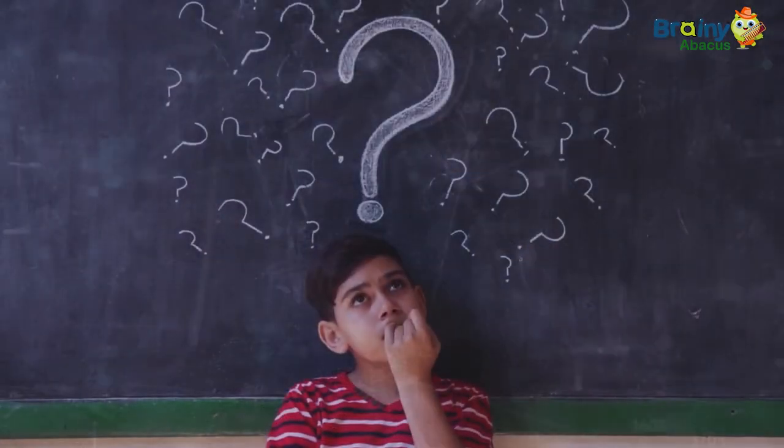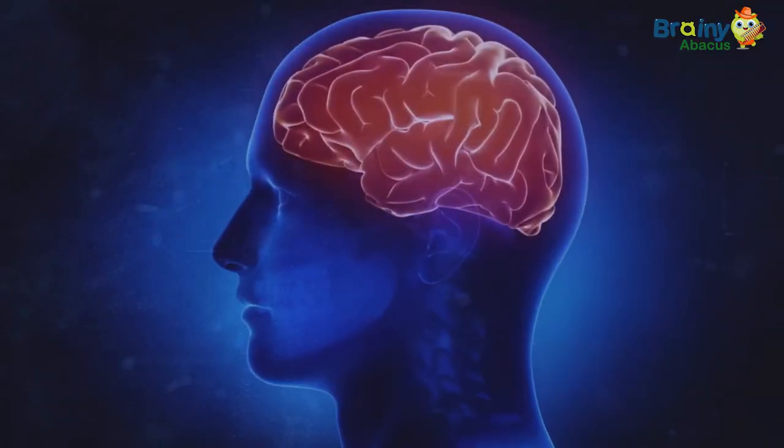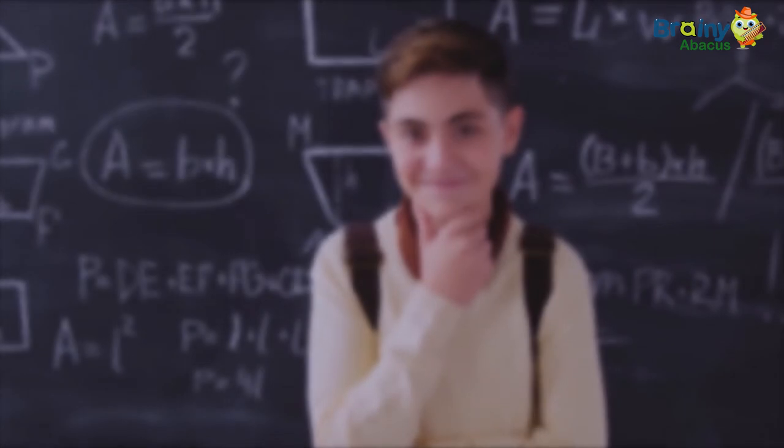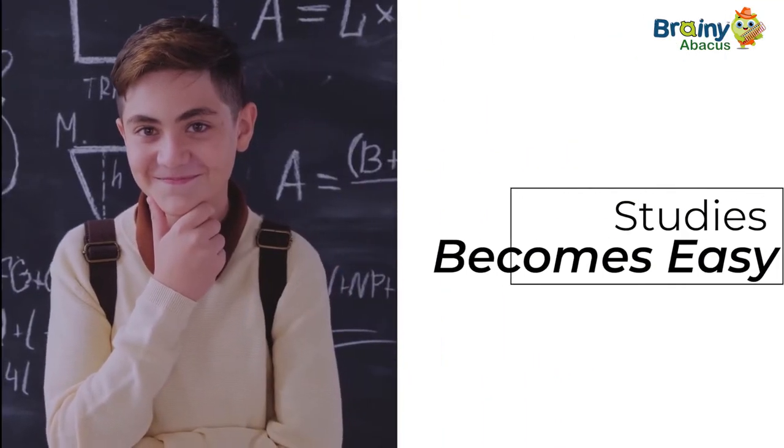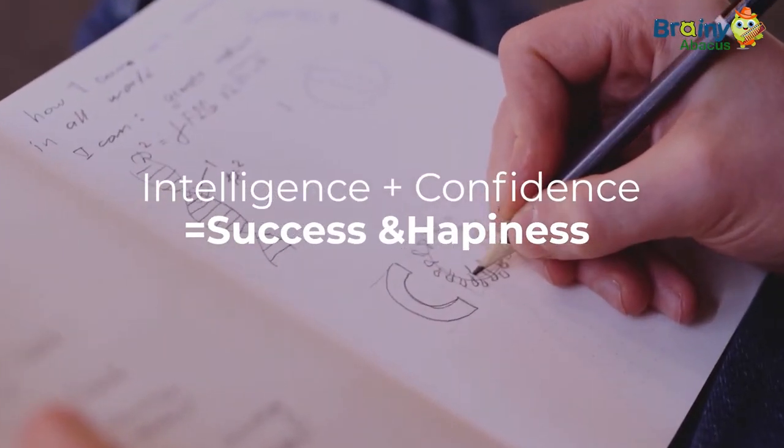Our research says that the best way to secure their good future is to make their brain skills more powerful. So powerful that their studies and other life situations seem easy for them. Their intelligence coupled with confidence can lead them to the success and happiness they deserve.